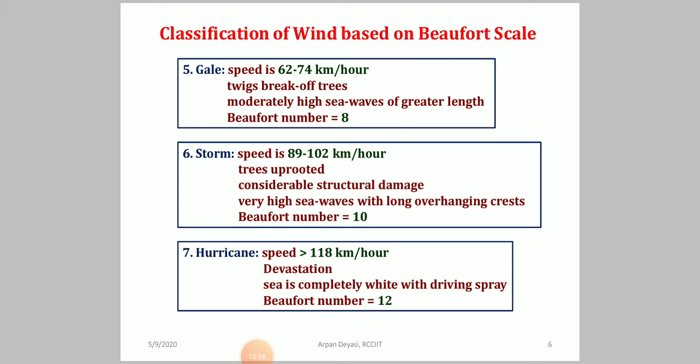Beaufort number 10 is a storm, with a speed of 89 to 102 kilometers per hour. Trees are uprooted and considerable structural damage occurs in urban and rural areas, with very high sea waves and long overhanging crests. Fishermen are restricted from going to sea during a gale and have no chance during a storm. Beaufort number 12 is a hurricane — speed greater than 118 kilometers per hour — causing complete devastation, with the sea completely white with driving spray.